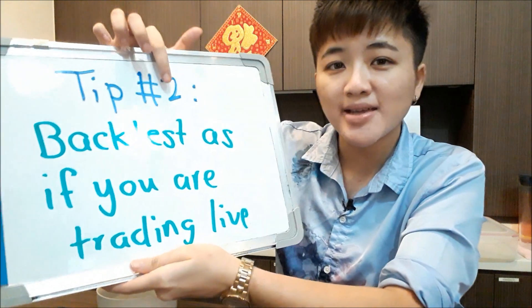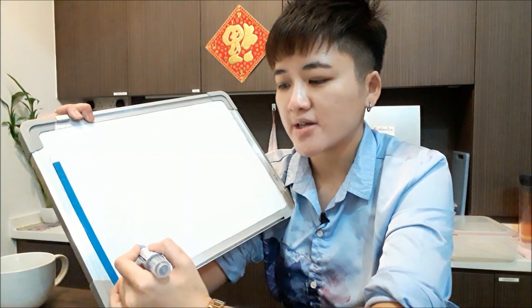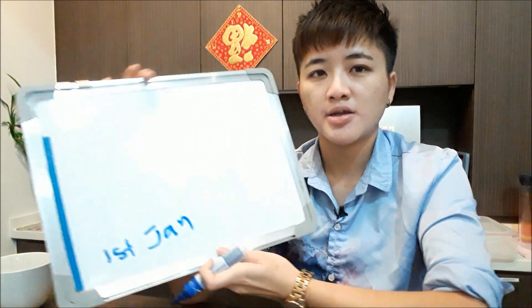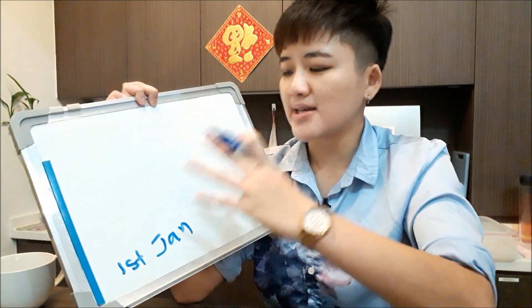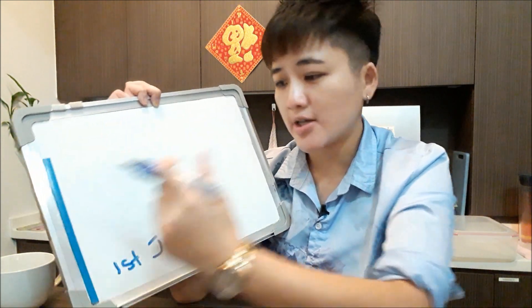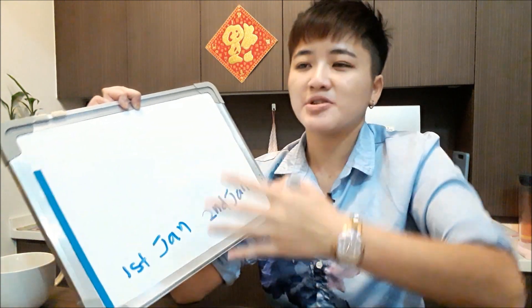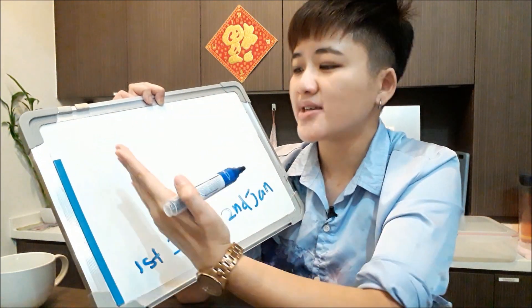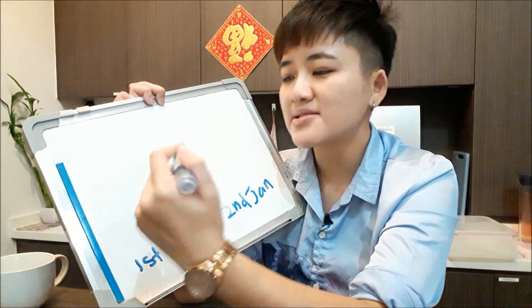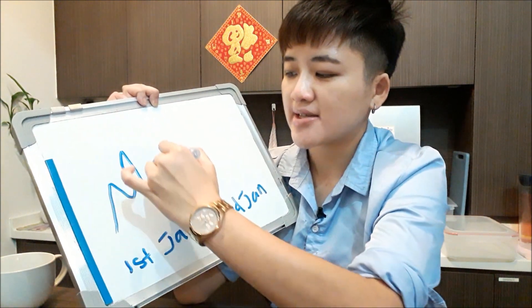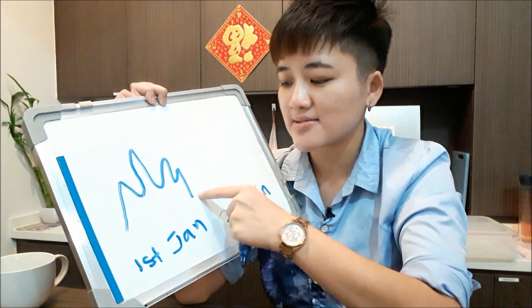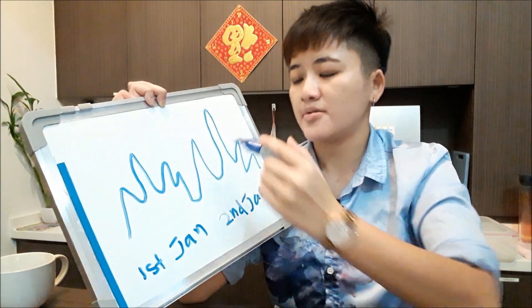In order to really gain good experience when back testing, you need to do it the right way. This brings us to the second tip: back test as if you are trading live. For example, if you want to back test January 1st, a common mistake many traders make is scrolling their chart so they can see prices for the whole day and even a few days later — second, third, fourth of January — meaning they can see what's going to happen after January 1st. If you want to back test 6am data, they scroll all the way so they can also see next day's 6am data.